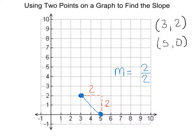When we look at this line, it has a rise of 2, and it has a run of 2. So the slope equals 2 over 2. Are we done? We're definitely not done.